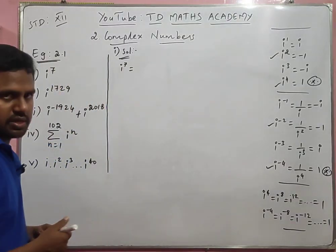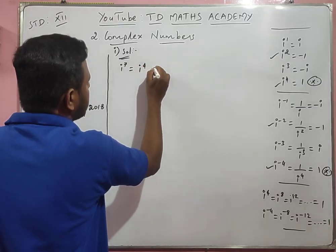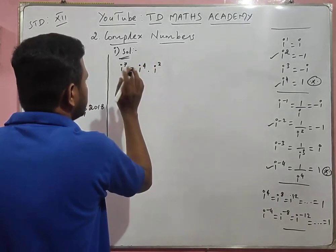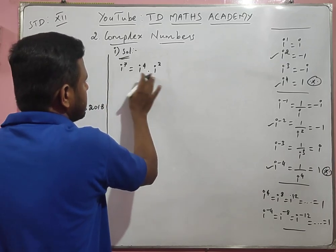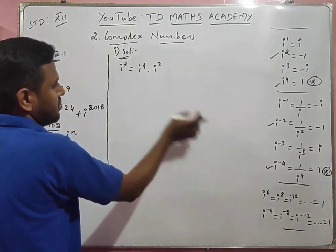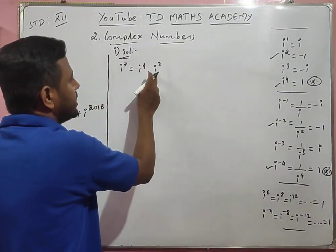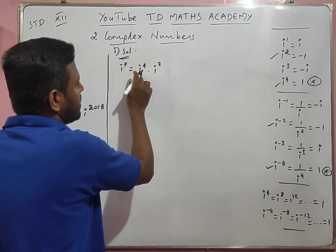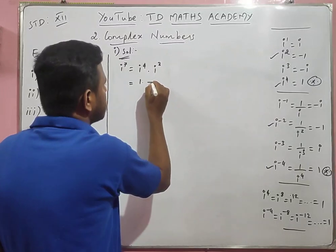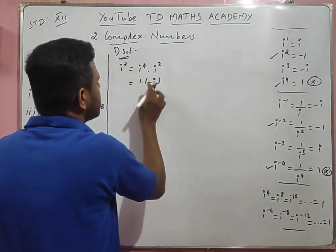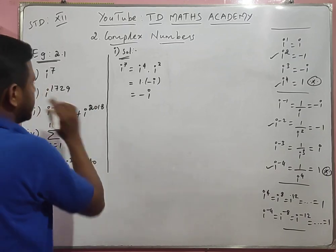First sum: i power 7. Rewrite as i power 4 into i power 3. i power 4 value is 1, and 1 into anything is the same answer. i power 3 value is minus i. Therefore 1 into minus i equals minus i. That is easy.